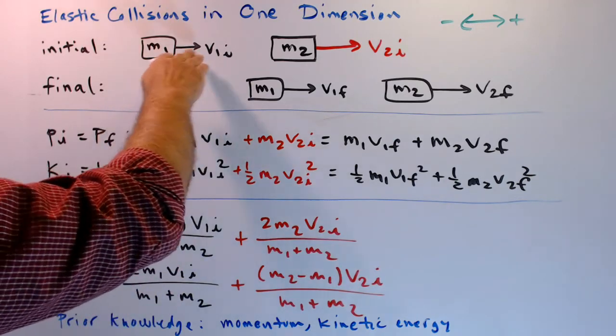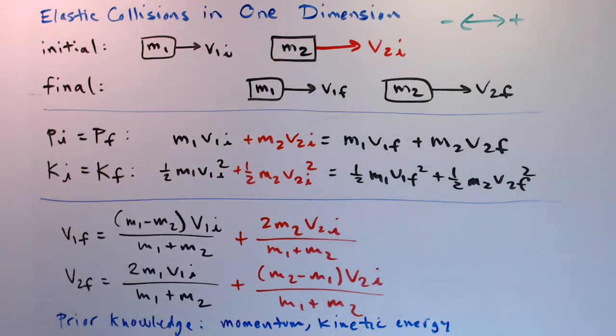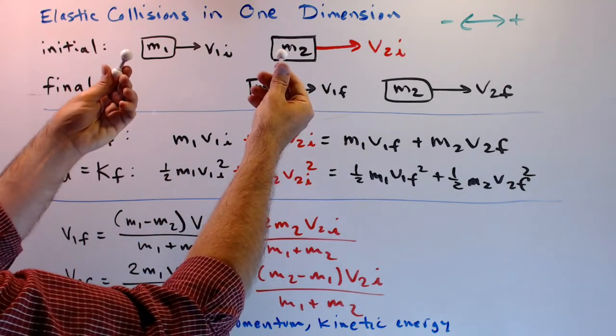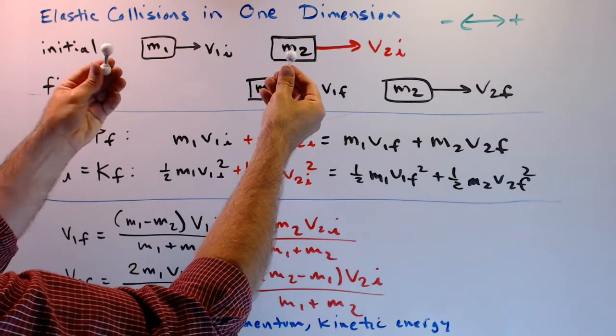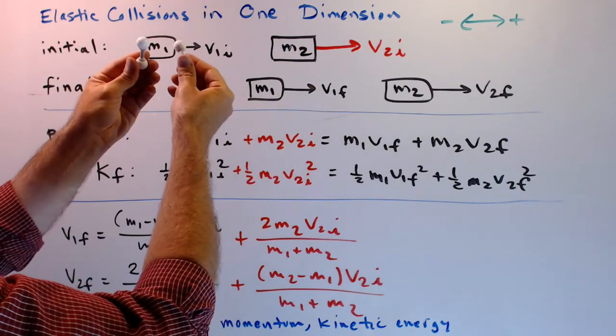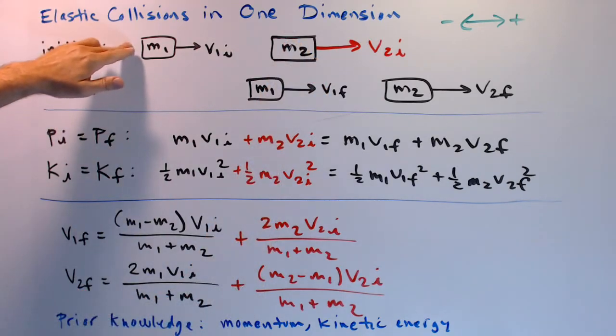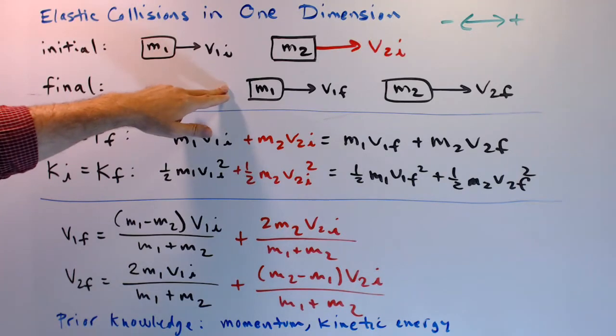So here we have mass one, mass two. They can be any kind of masses you like. Maybe they are molecules. These formulas do an excellent job of modeling what happens when two molecules floating through space bounce off of each other. Here we have the initial state just before the collision occurs. Here we have the final state just after the collision occurs.